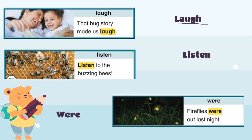Here is the first one, here is the second one, and here we have the third — these are the fireflies. 'Fireflies were out last night.' We use the word 'were' when we have more than one — when we are talking in a plural way.